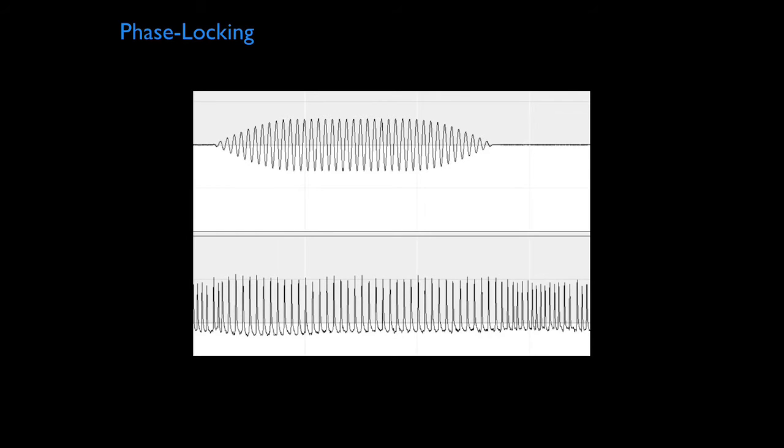So here's the close-up of the tone. That's a sinusoidal tone, and you get one action potential for every cycle of that tone. That's called phase locking.